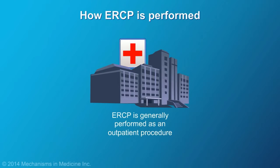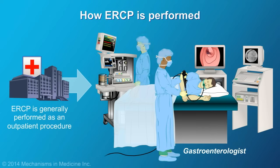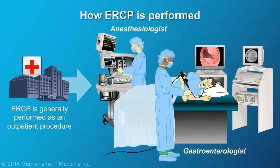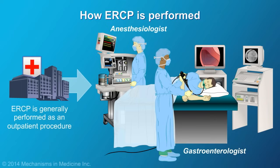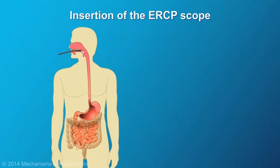ERCP is generally performed as an outpatient procedure, but on occasion it is performed when the patient is in the hospital for an acute problem. Gastroenterologists may work alongside anesthesiologists to provide sedation. A local anesthetic may be applied as a spray to your throat to numb the gag reflex. Your vital signs will be closely monitored throughout the procedure. A mouthpiece will be used to protect both your teeth and the scope. The ERCP scope is inserted into the mouth, passed through the esophagus, into the stomach and duodenum.